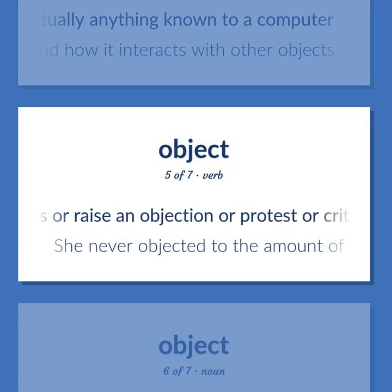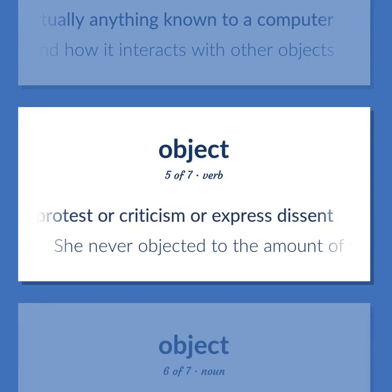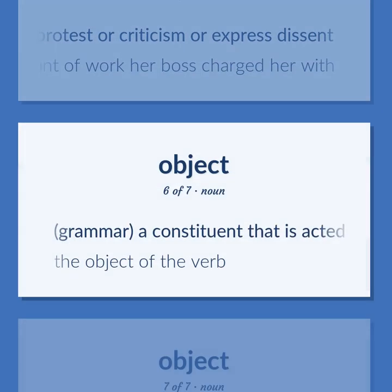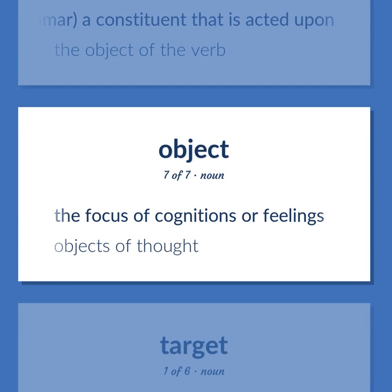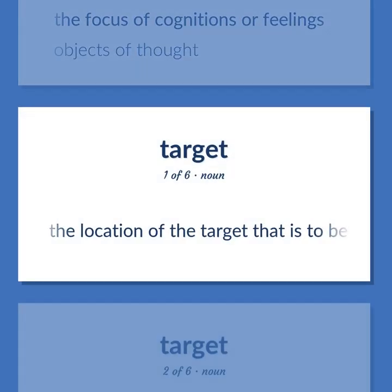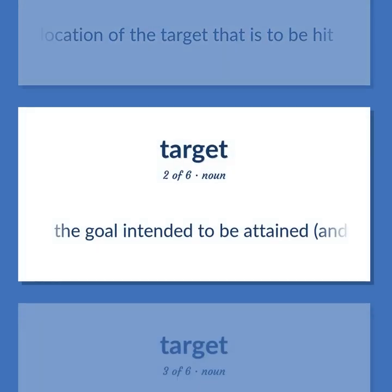Express or raise an objection, protest, criticism, or express dissent. She never objected to the amount of work her boss charged her with. Grammar: a constituent that is acted upon — the object of the verb. The focus of cognitions or feelings. Objects of thought. The location of the target that is to be hit. The goal intended to be attained, and which is believed to be attainable.